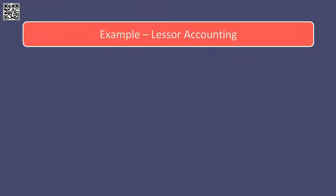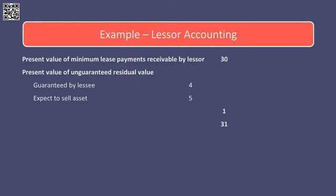Let's look at some numbers. From the lessor's point of view, the first activity is to calculate an asset for the balance sheet. Assets are access to economic benefit, so what is our access? We have the right to recover money from the lessee in the form of lease payments. We calculate the present value of those minimum lease payments receivable by the lessor, and that gives us the first part of our debtor. Under lessor accounting this is referred to as the net investment in the lease, made up of the present value of minimum lease payments receivable by the lessor. It also includes the present value of unguaranteed residual value.